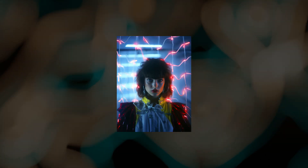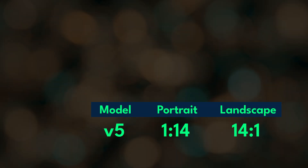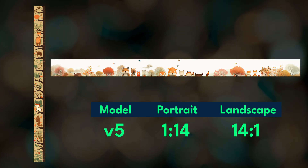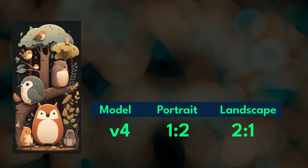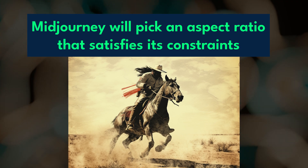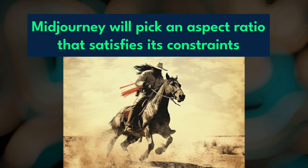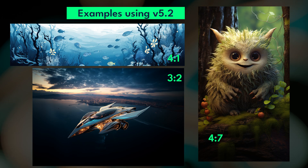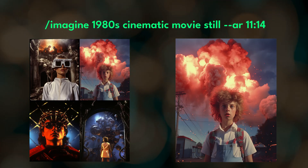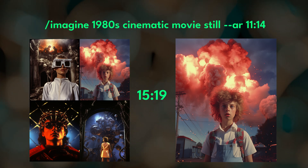Each Midjourney model allows a certain amount of stretch for aspect ratios. In V5 models, you can go as tall as about 1 to 14 or as wide as about 14 to 1, whereas in V4 you can't go beyond 1 to 2 or 2 to 1. Midjourney will pick the closest aspect ratio to the one you requested that satisfies all of its constraints. Sometimes it's the aspect ratio you requested, and other times it's not. Asking for an 11 to 14 image in V5.2 will give you one that's approximately 15 to 19 — close, but not exact.